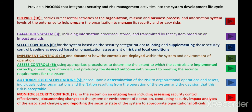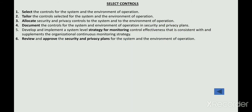In the Control Selection stage, sub-activities include the selection of controls, tailoring of these controls, allocation of these controls to the system, documenting these controls, and developing a strategy for monitoring control effectiveness. You then review and approve the security plans for the system.